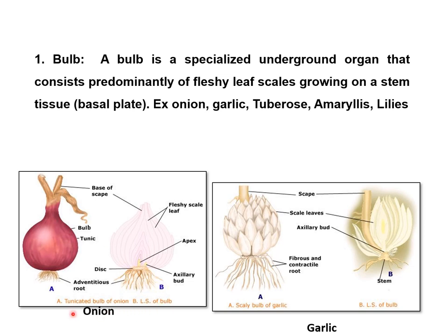An example of the tunicated bulb is onion. In tunicated bulbs, there are a number of scales and at the base there is the presence of axillary buds and an apical bud — in this way the tunicated bulb can be used for further multiplication. The second type is the scaly bulb, whose example is garlic. Garlic has scales which are considered fleshy and enriched with food material, and the individual scale — considered a clove — is used for multiplication due to the presence of axillary buds. This type of bulb is known as a scaly bulb.